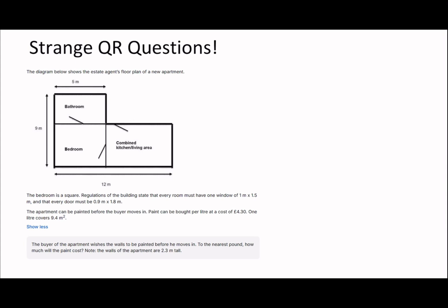On to the next question then. So this question is quite a tricky one. So someone asked if there was a potentially faster way to do something like this. I don't necessarily think so. I think I'll try and go through what I think is the fastest way. I mean, there probably is potentially a faster way, but not that I can see. Especially it makes things a little bit more complicated because there are windows and doors you have to exclude. So let's have a look at this question. It says, The buyer of the department wishes the walls to be painted before he moves in. To the nearest pound, how much will the paint cost? You've got the bathroom, bedroom, combined kitchen and living area. The walls of the apartment are 2.3 meters tall.